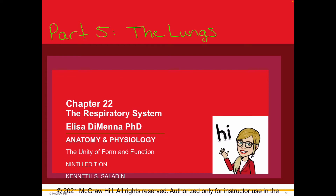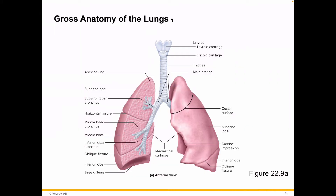Hey everybody, this is Alisa. I'm back. We're talking about the respiratory system, and this time we're going to look at the lungs. Here's some large-scale gross anatomy of the lungs. We talked a little bit about the trachea bringing the air in and out — it bifurcates into the bronchi, right and left side, and that is going to help ventilate the lung.